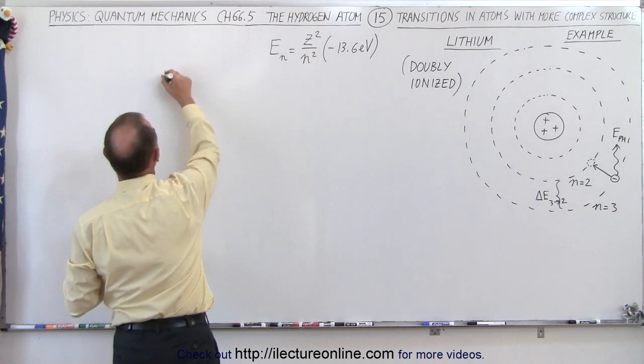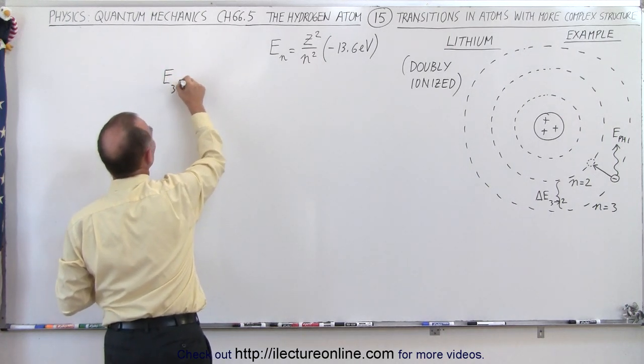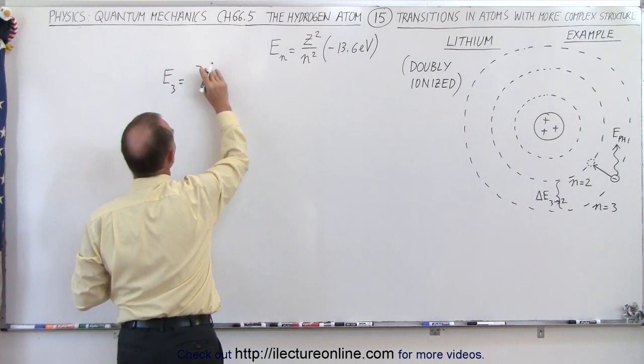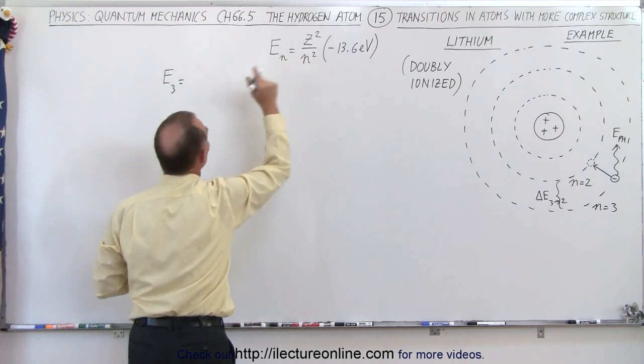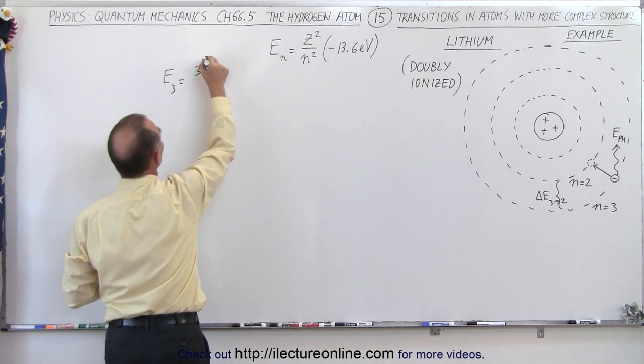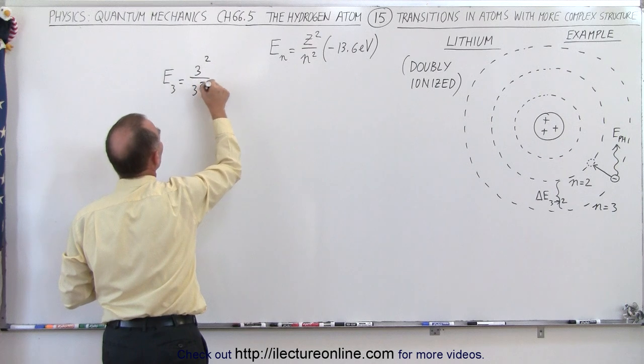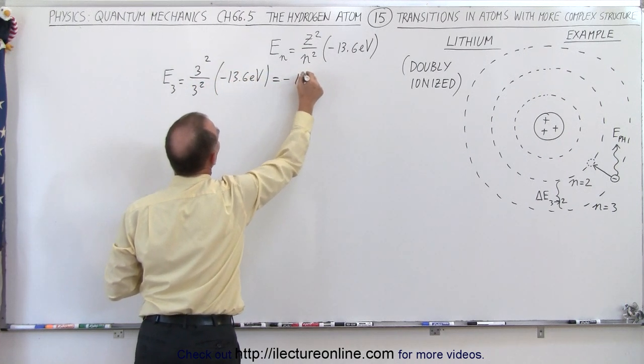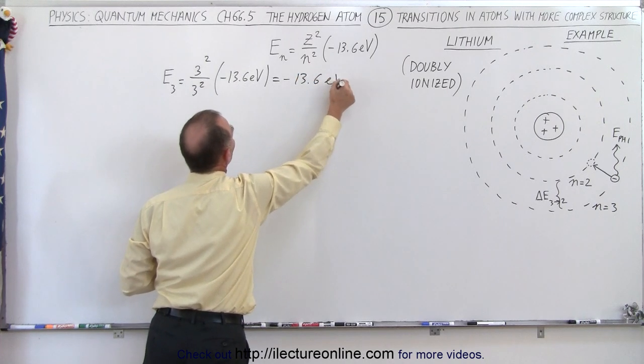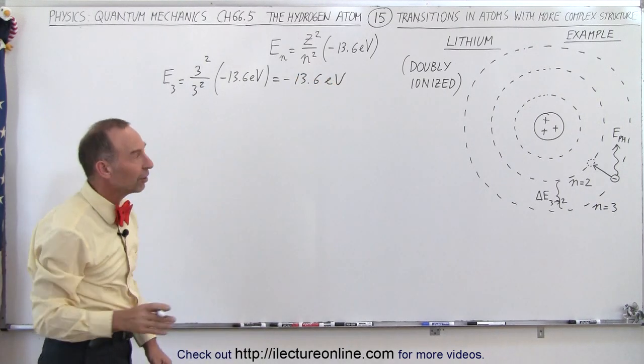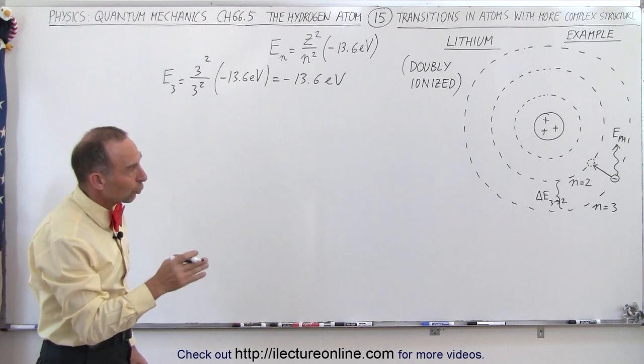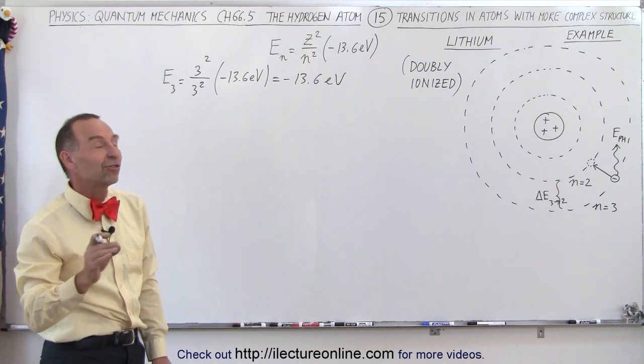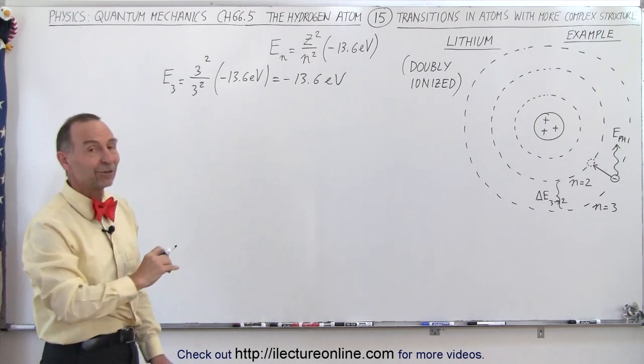So E sub 3 is equal to Z squared, so Z squared in this case would be 3 squared divided by 3 squared times the minus 13.6 electron volts, which is minus 13.6 electron volts. So you can see that the energy level of the third level, the third orbit in lithium, is the same as the energy level of the first orbit in hydrogen.